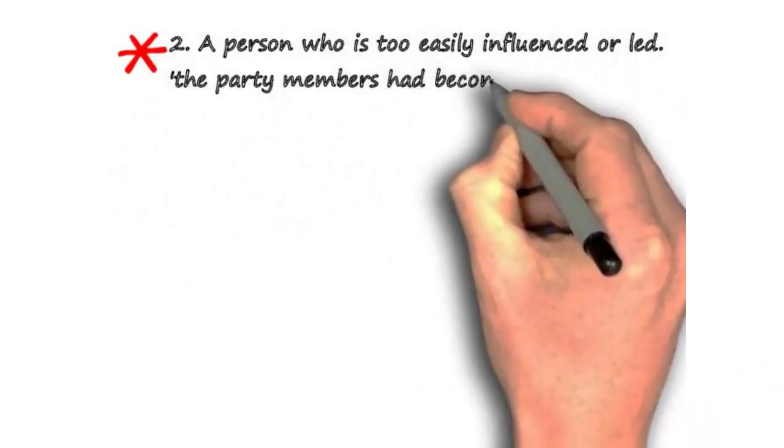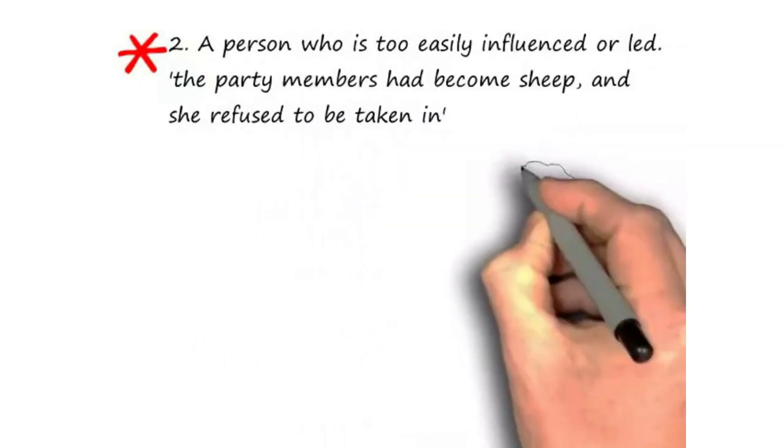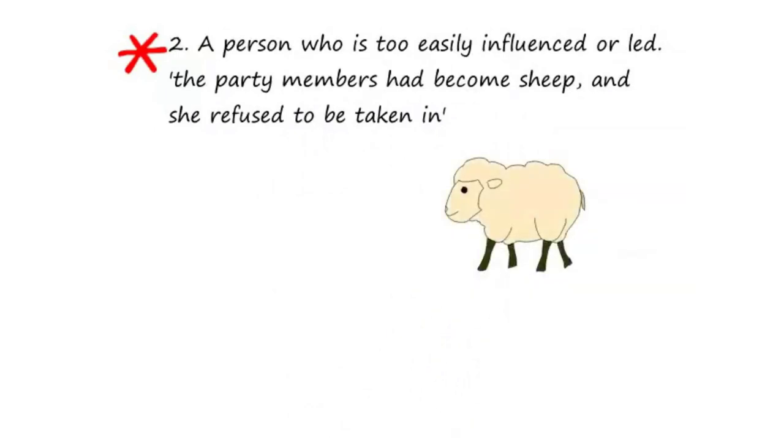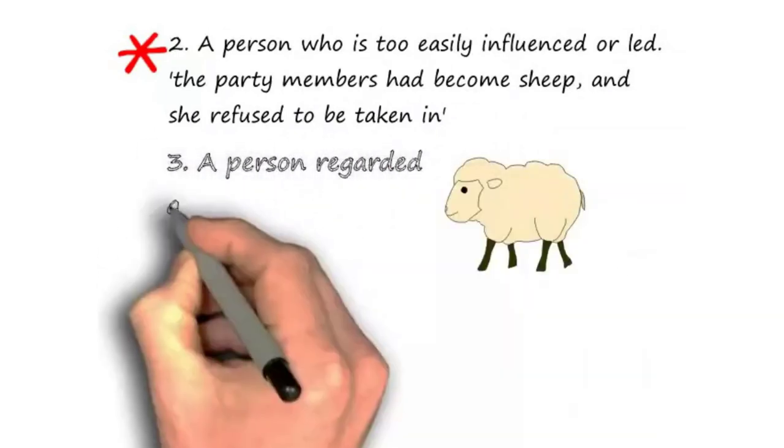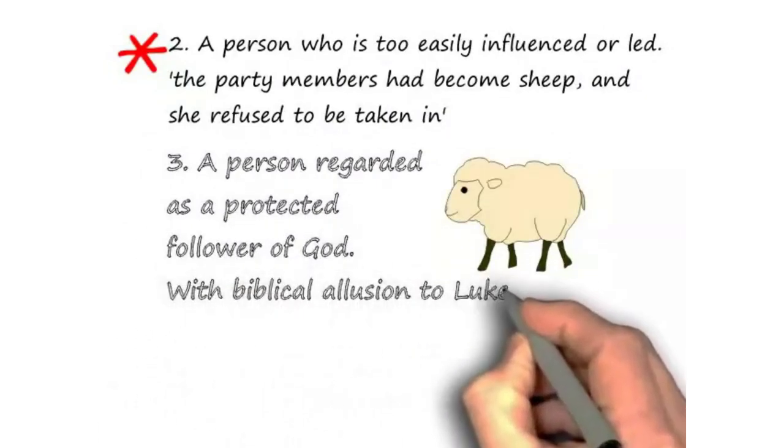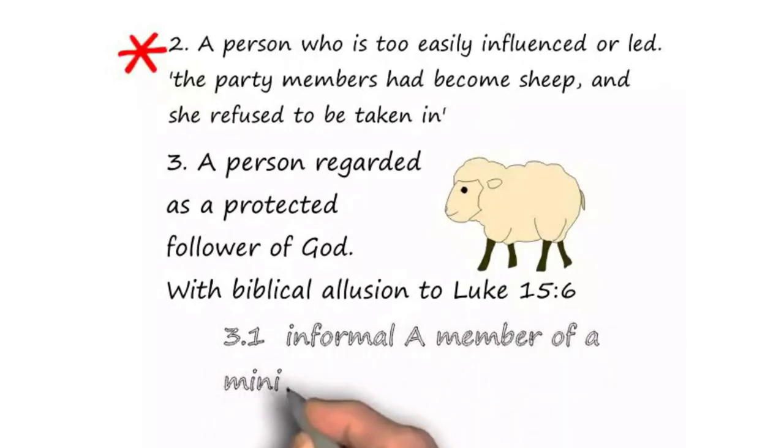Number three: a person regarded as a protected follower of God. 3.1, and this is the informal, it says a member of a minister's congregation.